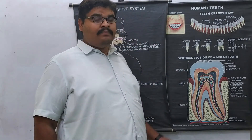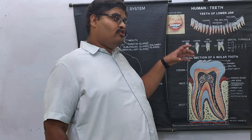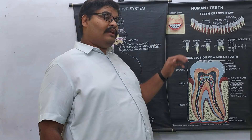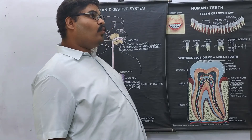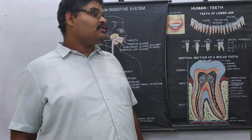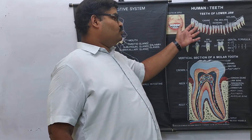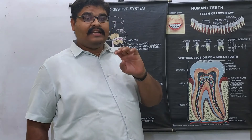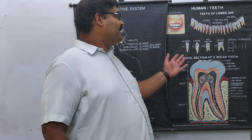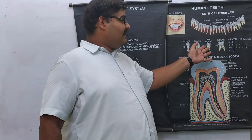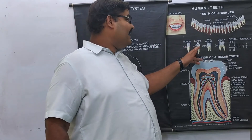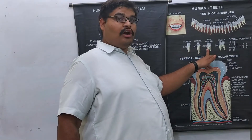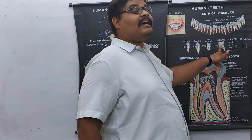Since teeth are fixed into sockets they are called thecodont. Since we have two sets of teeth, we are diphyodont. We are also heterodont because we have several types of teeth: incisors for biting, canines for tearing, premolars for chopping, and molars for thorough grinding of food. So we have four types of teeth — incisors, canines, premolars, and molars.